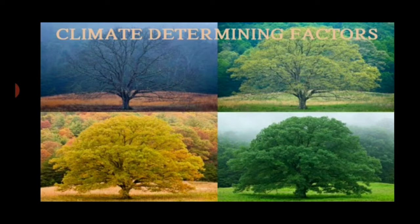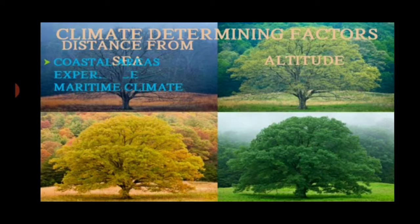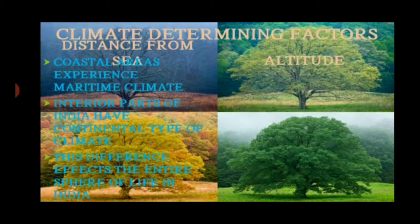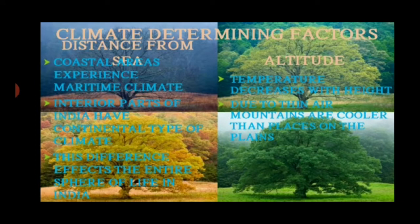The climate-determining factors further include distance from the sea and altitude. Coastal areas experience a maritime type of climate, while the interior parts of India have a continental type of climate. Temperature decreases with height — mountains are cooler than places on the plains.